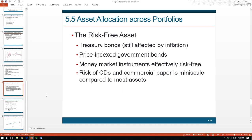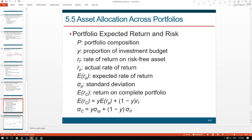In most recent years, some Wall Street professionals have turned towards price-indexed government bonds, which are another good candidate for the risk-free asset. Now let's look at how to do asset allocation across different assets using a simple example. We have a combination of a risky asset and a risk-free asset. The risk-free asset earns the risk-free rate RF, and RP is the return for risky assets. When we combine those two assets based on certain percentages, we form a complete portfolio containing both risky and risk-free assets.